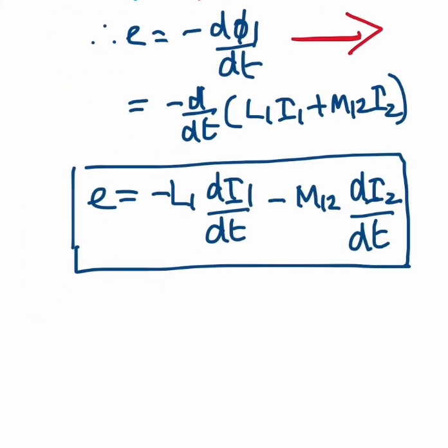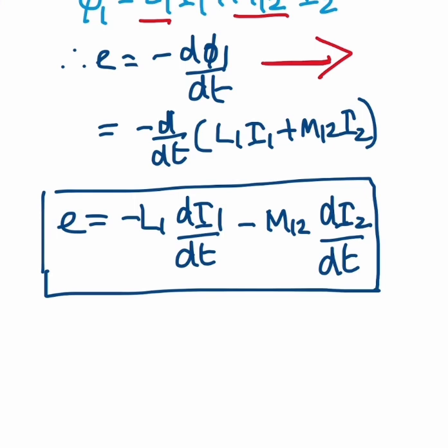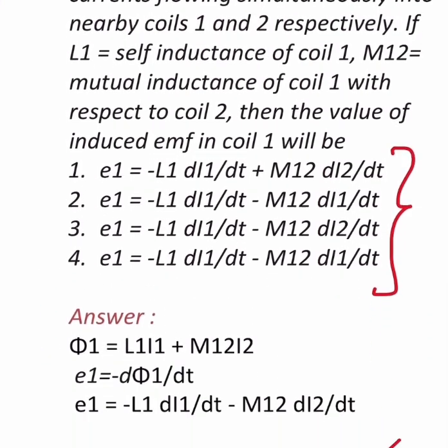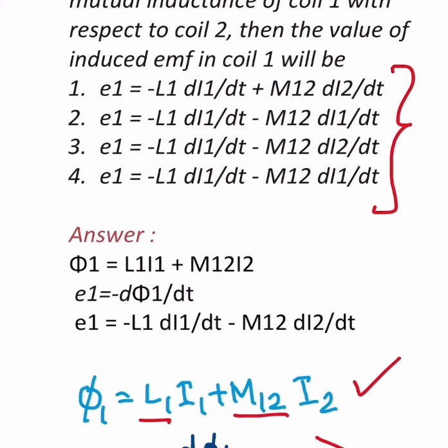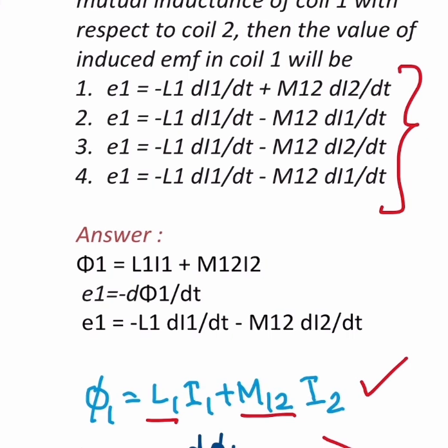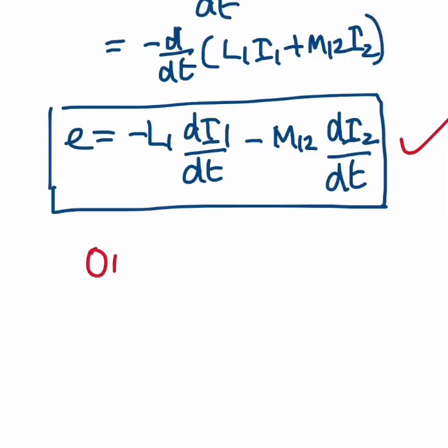So this is the answer. Now from this answer we can go back to the options and see. This option is the third one, that is e1 equals minus L1 dI1/dt minus M12 dI2/dt. So the correct answer is option 3.